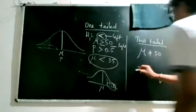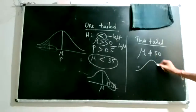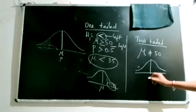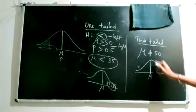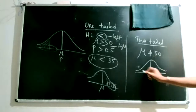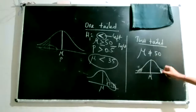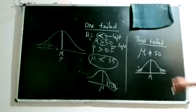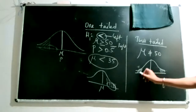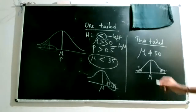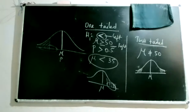In cases where you are not sure about the value of mu but are certain it is not equal to a given value, you suspect it is either above or below. In that case, you simultaneously concentrate on both tails, and the tests are called two-tailed tests.